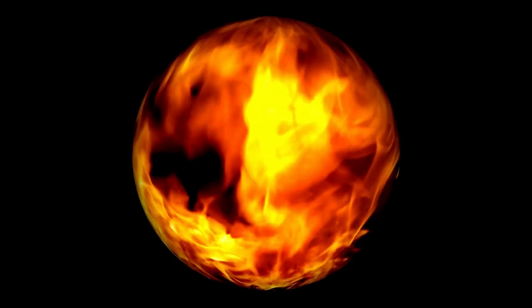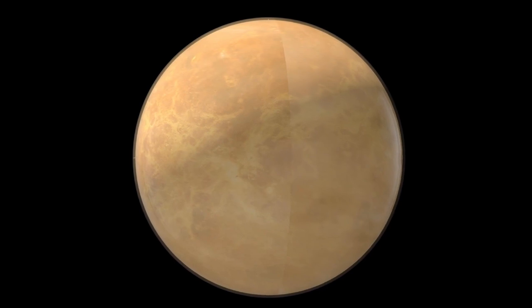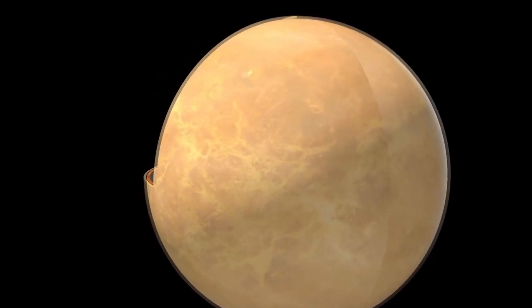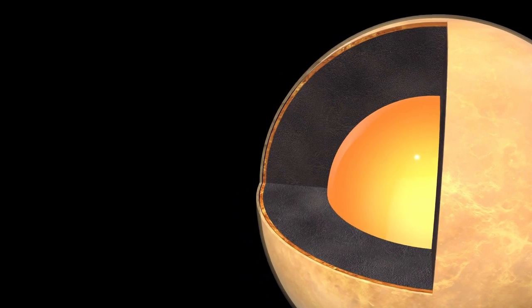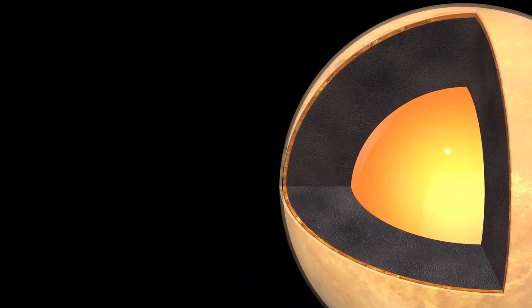As we enter the Kepler-70 system, you'll notice something eerie. The light from its central star isn't warm or yellow like our sun. Instead, it shines with a haunting blue-white glow, almost ghostly in its brilliance.